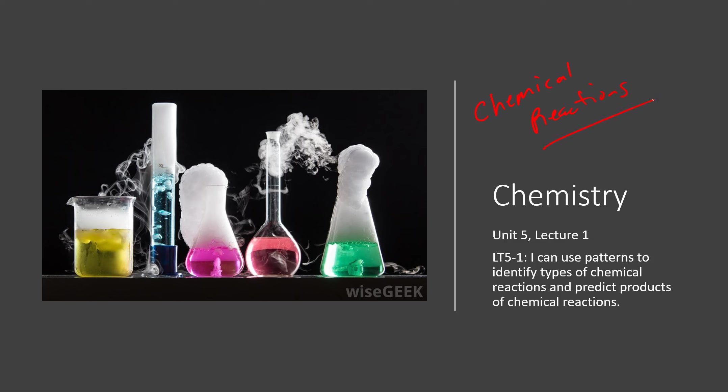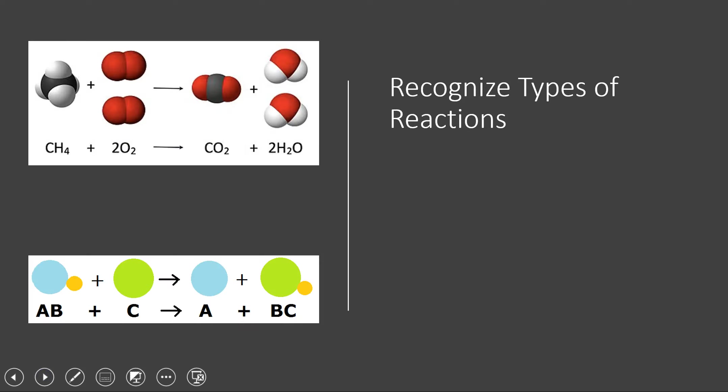We're going to start with using patterns to identify types of chemical reactions, and then use those patterns to predict what we will get after a reaction occurs. So one of the things you guys are going to need to do is recognizing types of reactions. We can categorize types of reactions based on patterns of what occurs.